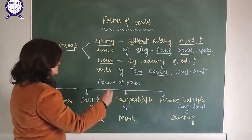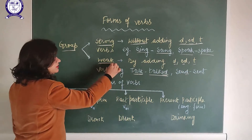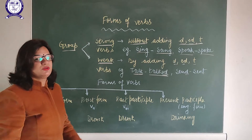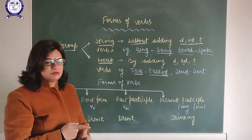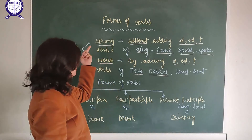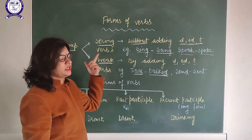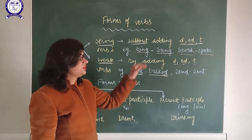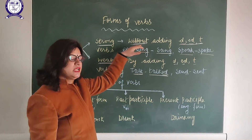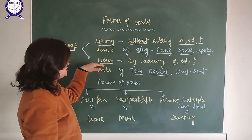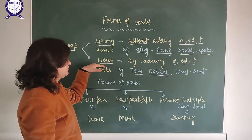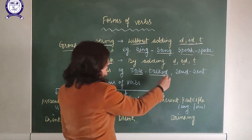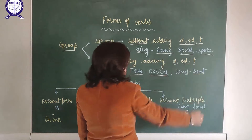All those verbs are known as the weak verbs. So now we have understood that there are two groups of verbs: the first is the strong verbs, whose past forms are made without adding D, ED, or T; and the second is the weak verbs, whose past participles are formed by adding D, ED, or T.